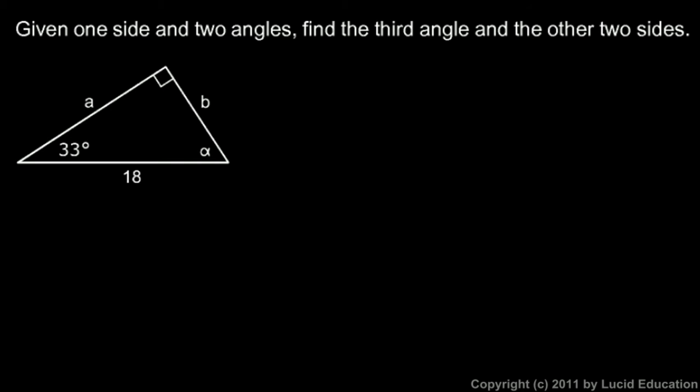The third angle, which in this problem is called alpha, is really easy because we know that all three angles have to add up to 180, which means these two have to add up to 90. So alpha is just 90 minus 33, which comes out to 57 degrees.